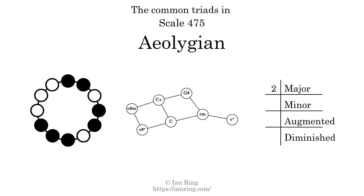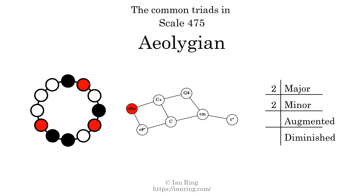There are two major triads. There are two minor triads. There is one augmented triad. There are two diminished triads.